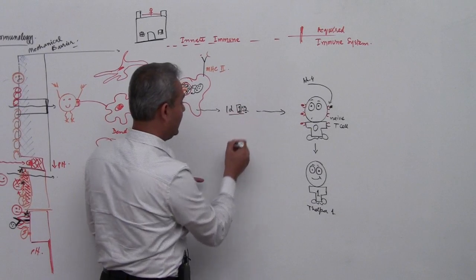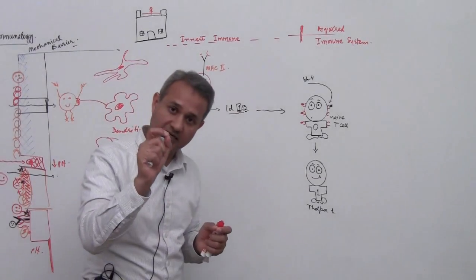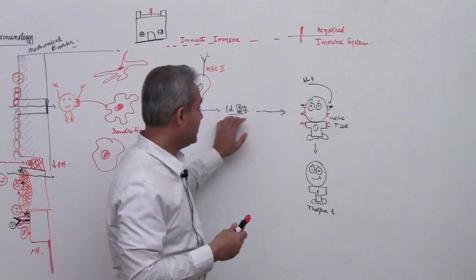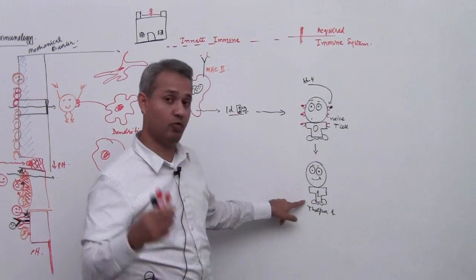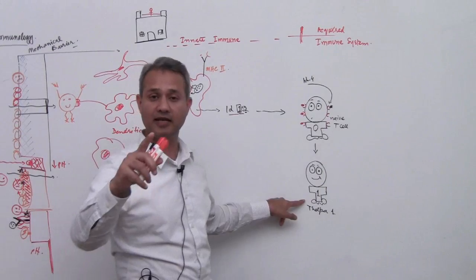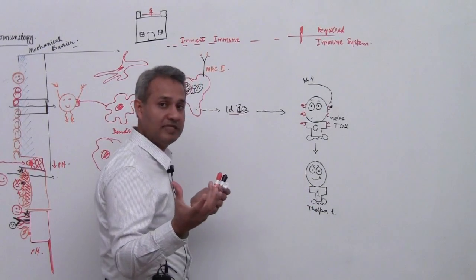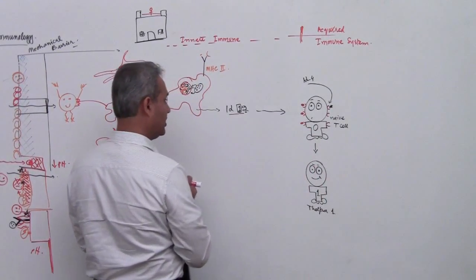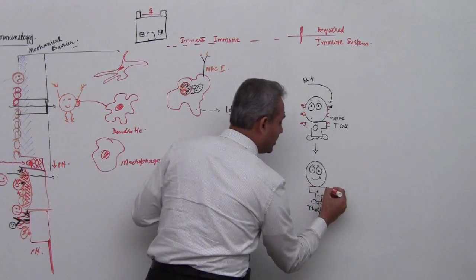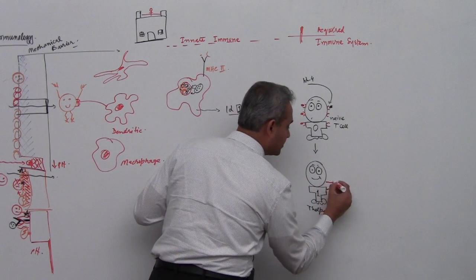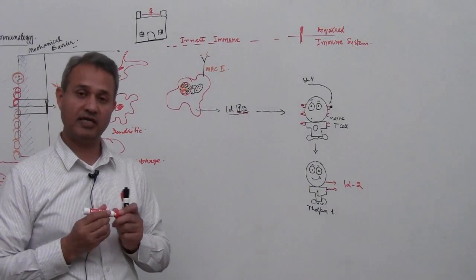From here, when IL-12 is secreted from a macrophage, the T helper 0 will get converted into T helper 1. Here's the fun thing: when T helper 0 becomes T helper 1, the T helper 1 starts secreting IL-2. That's how we will remember it.